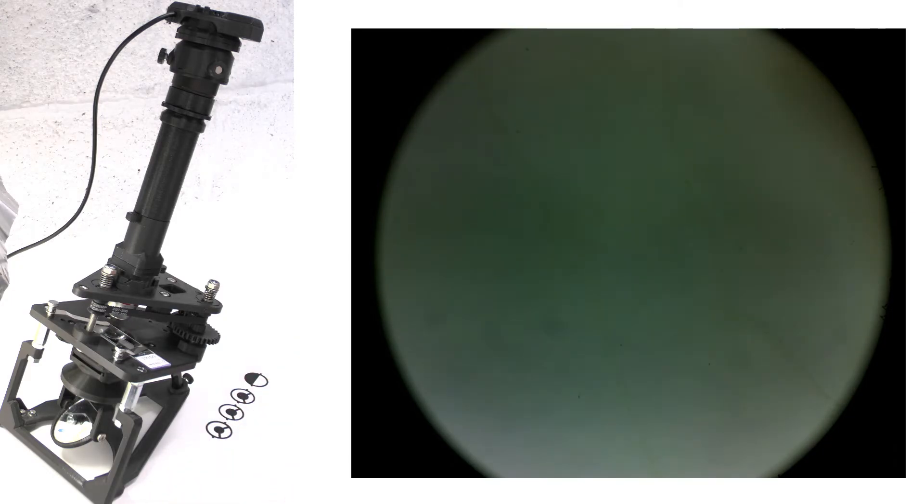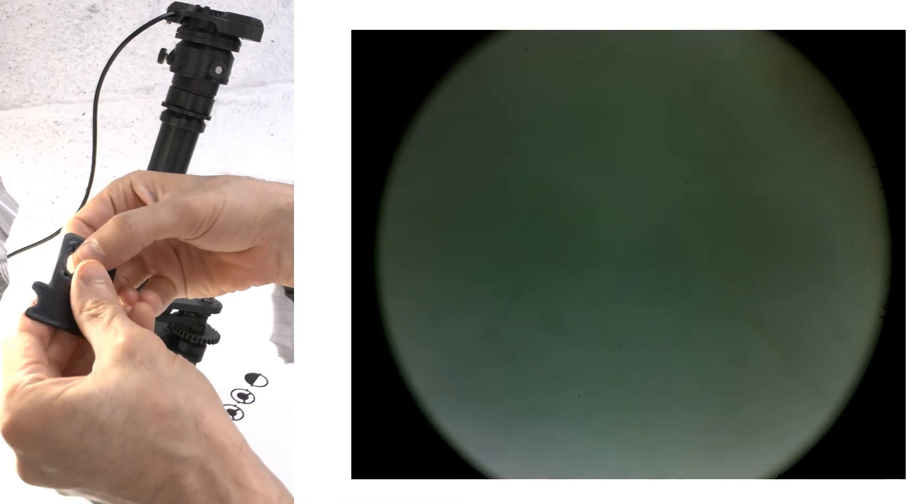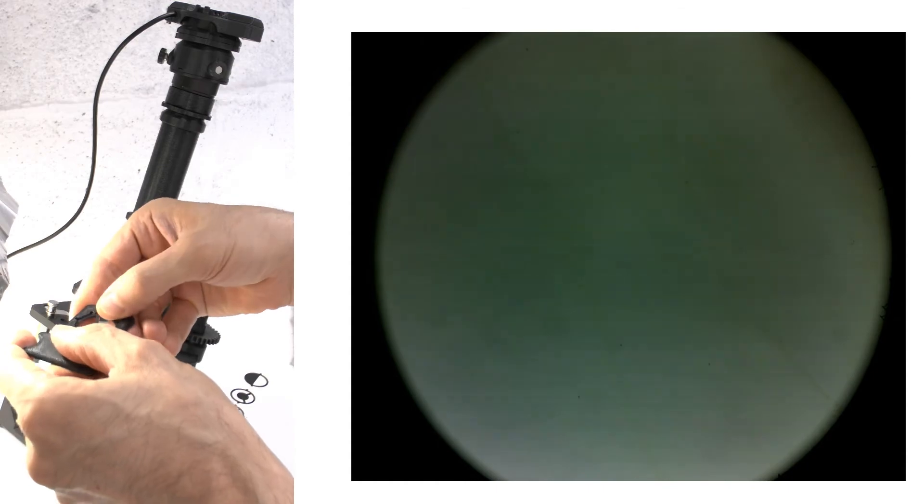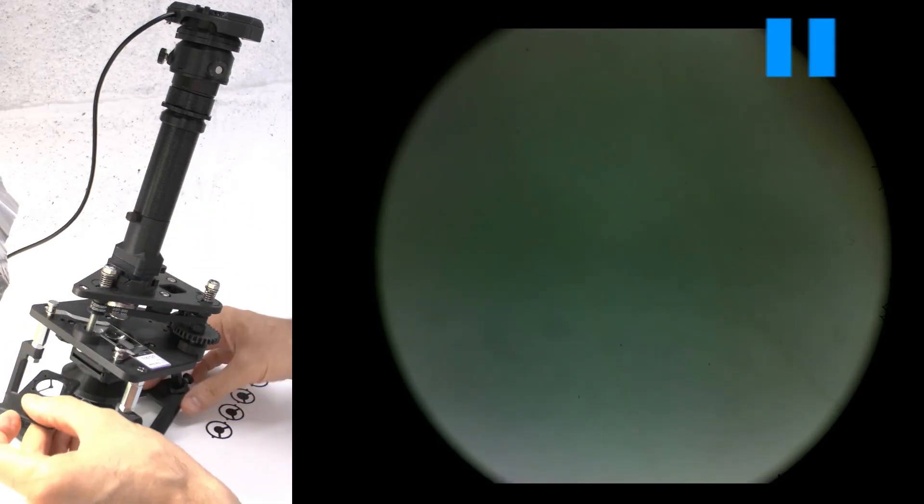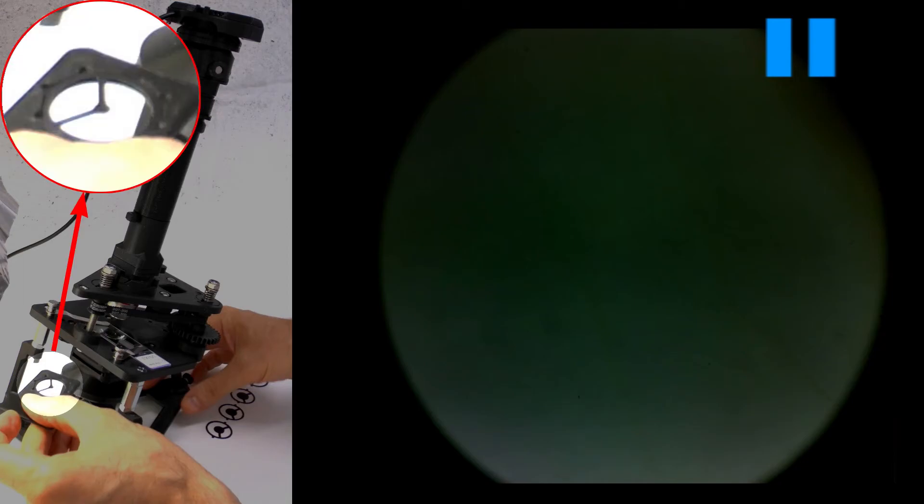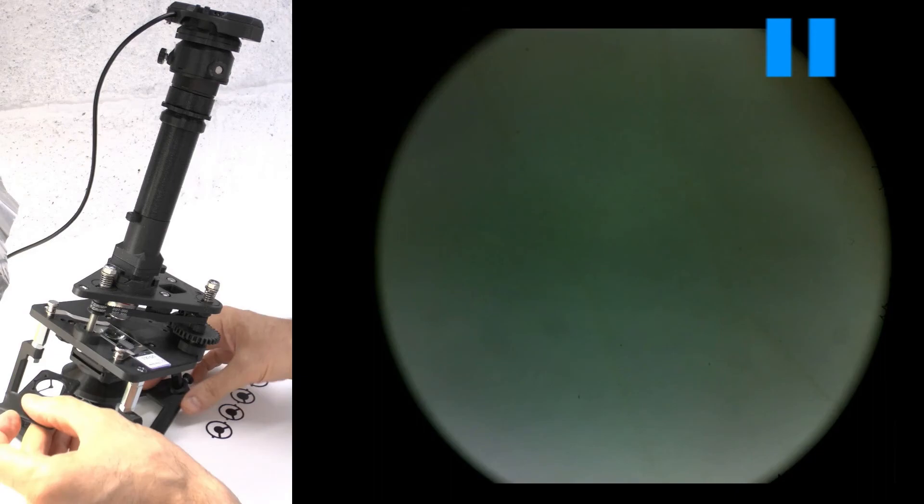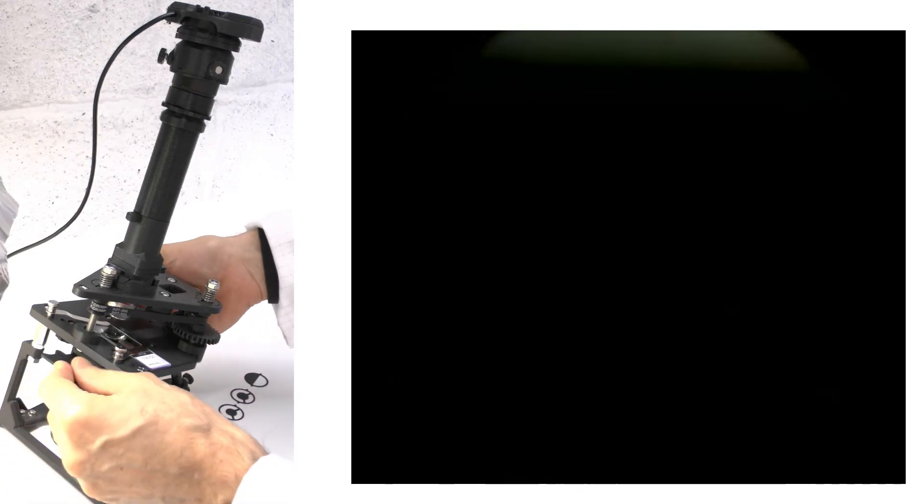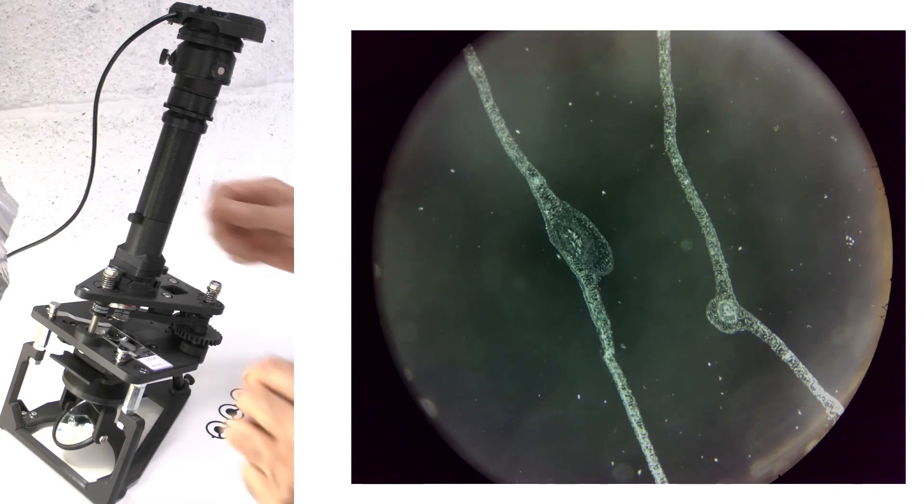First, I will demonstrate dark ground microscopy, also called dark field microscopy, using a 4x objective. For dark ground, we use a central obscuring disc as the filter. The size of the disc must be matched to the numerical aperture of the objective, so it is quite small here because the 4x lens has a low numerical aperture. Note that you can hardly see the tissue with normal illumination, but as soon as the dark ground filter is inserted into the condenser, the tissue section dramatically stands out.